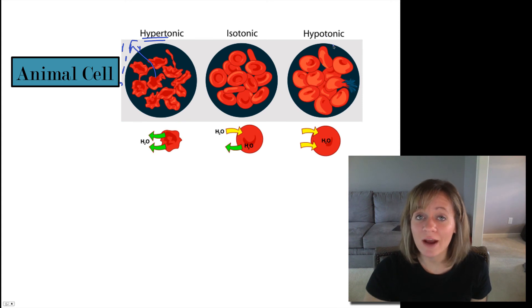In a hypotonic environment, the environment has hardly any solute. It has low solute, hypo low solute. So water is going to want to follow solute inside of the cell. There's too much solute inside the cell and the cell is going to burst. See this cell bursting here? We call it lysing, L-Y-S-E.